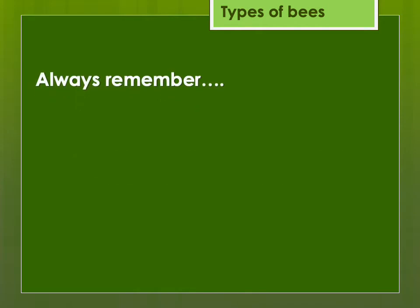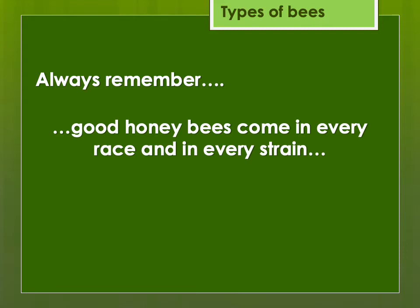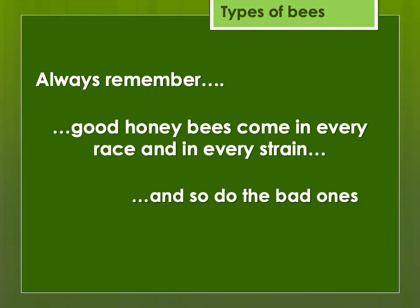Always remember that good honeybees come in every race, every strain, and every ecotype — but so do the bad ones. Carniolans are supposed to be very gentle, but I've had some very hot, defensive carniolan hives. Italians are supposed to be very productive, but I've had Italians that really weren't very productive. There is a lot of overlap between the good and not-so-good characteristics. Sometimes if you don't have an option, you might just have to get what's available. You can always requeen later with the type you want, like the following year, if that's what you prefer.